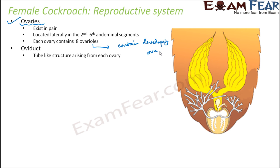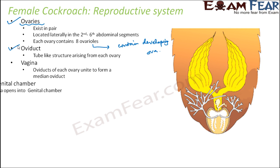Next is the oviduct — a tubular structure arising from each ovary that carries the eggs produced by the ovary. Then comes the vagina: the oviducts from each ovary unite to form a median oviduct. The two oviducts join together to form a common duct, which opens into an opening called the vagina.